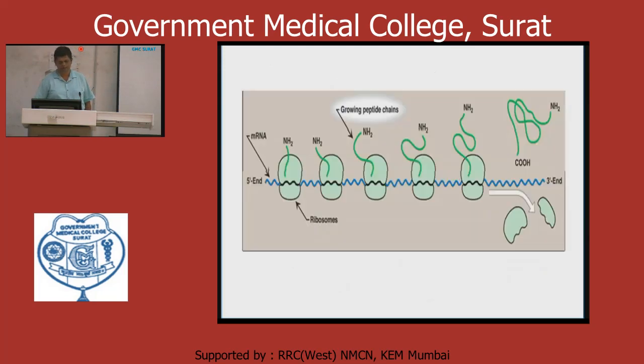The elongation factor figure shows elongation factor 1 and 2. The new acceptor amino acid comes to the A site with elongation factor 1, and the P site works with elongation factor 2. When translocase acts, the elongation factor work is complete. This is the protein synthesis — initiation, elongation, and growing peptide chain.